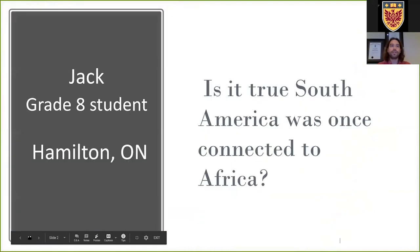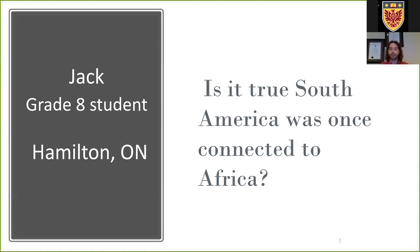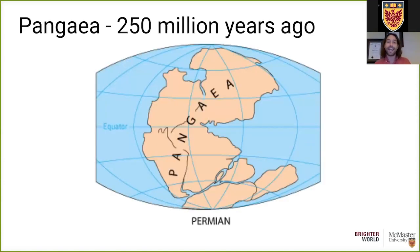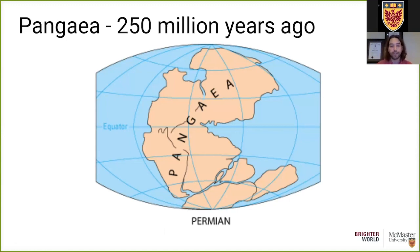Our first question comes from Jack from Hamilton, a grade 8 student. Jack asked: is it true that South America was once connected to Africa? The answer is yes — in fact, all of the continents at one point were connected together to form one large supercontinent that we geologists refer to as Pangaea. This is a snapshot of what the earth roughly would have looked like about 250 million years ago in an era called the Permian period.